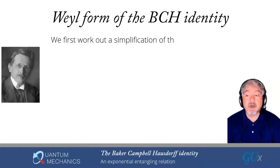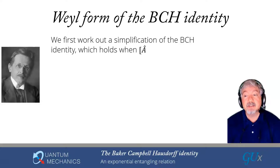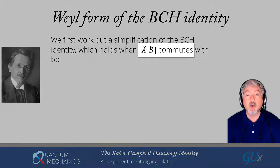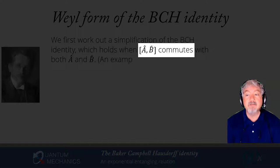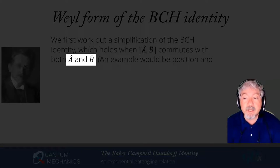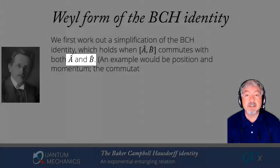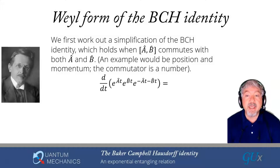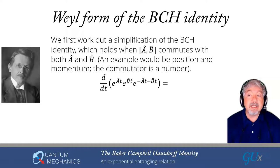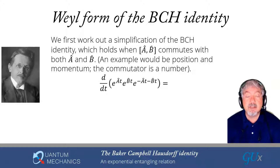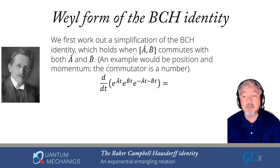To work out the Weyl form, we use a simplification of the BCH identity that holds when the commutator of A with B commutes with both A and B — meaning the nested commutators [A,[A,B]] and [B,[A,B]] are both zero. An example is taking A equal to position and B equal to momentum, because [x,p] = iℏ, which is a number and commutes with everything.